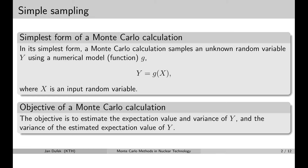I'm going to explain the simple sampling technique on this very simple form of the Monte Carlo simulation. Here y denotes the result that you want to calculate, g is a function that represents the numerical model, and we are going to build numerical models dependent on random variables. x here denotes a random variable.